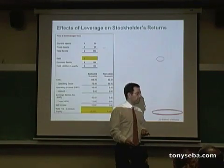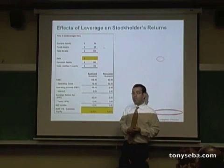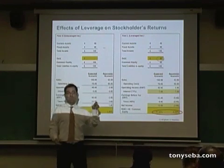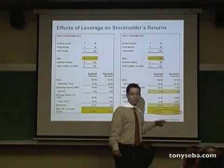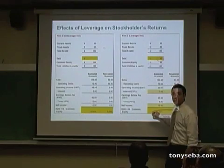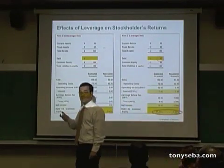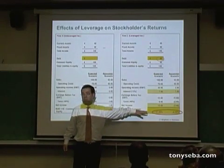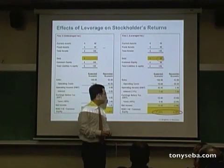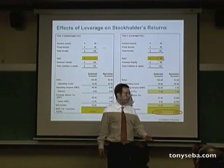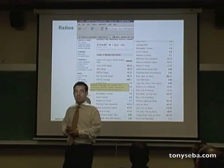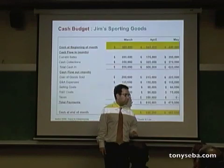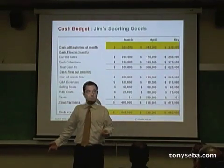We looked at how to use ratios to measure companies — what is the difference in leverage between two companies, and what kind of difference does that make on the bottom line? If one company is more levered than another, what does that do to the company in terms of ROE or net income? We also went to the web to look for sources of those ratios.